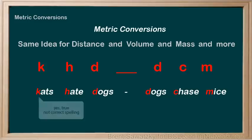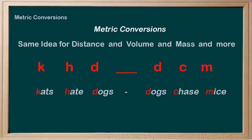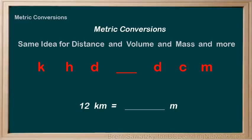And once you have this down, metric conversions are a cinch. Let's do an example. 12 kilometers equals how many meters? In this case, we're talking about distance, so the root unit here would be meters.